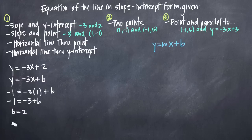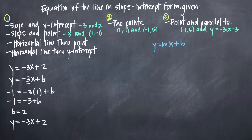That gives us the equation y equals negative 3x plus 2 — we already know the slope is negative 3, and we just found b, the y-intercept, is 2. Notice that the equation found using the slope and y-intercept, and the equation found using the slope and a point, are of course the same.